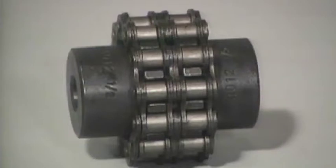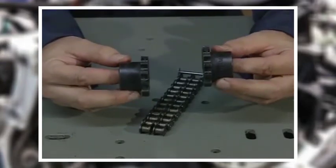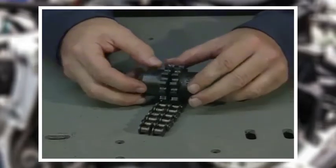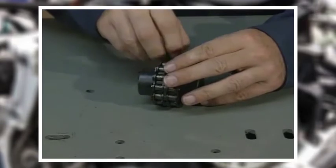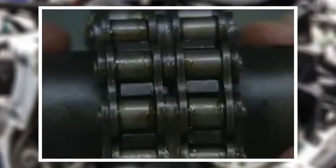Chain sprockets with specially shortened and hardened teeth are attached to each shaft, then a piece of double chain is wrapped around them to make the coupling. Chain couplings are flexible enough to tolerate about half of one degree of angular misalignment.